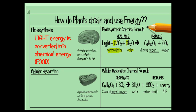Light will take carbon dioxide — remember, plants get that from the air — and water, which they get from the roots, and it converts them into glucose. The glucose molecule has six carbons, twelve hydrogens, and six oxygens, all bonded together in a ring. That's glucose.